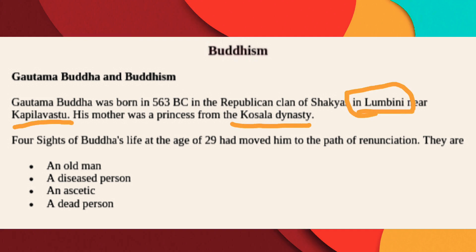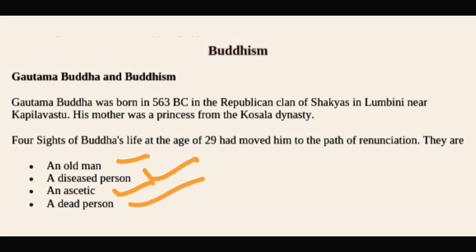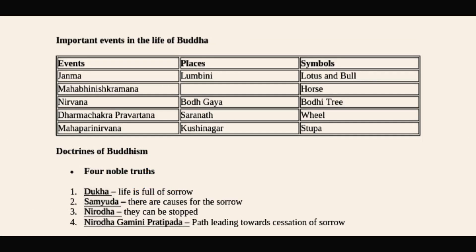Four sights of Buddha's life at the age of 29 moved him to the path of renunciation. They are: an old man, a diseased person, an ascetic, and a dead person.